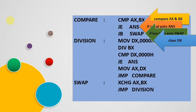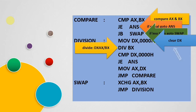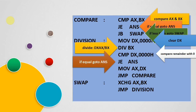Otherwise we perform the division operation. For performing division, the DX register must be cleared first. Then we divide AX by BX — that means the DX:AX pair is divided by BX. In DX we get the remainder, and we compare the remainder with zero. If they are equal, we have found the GCD.